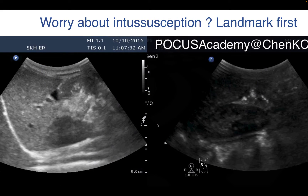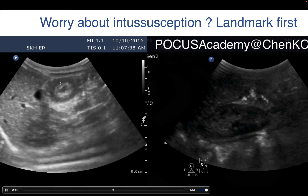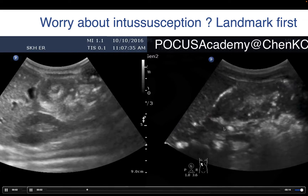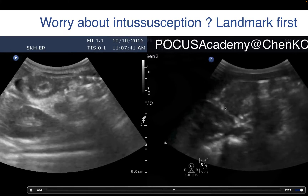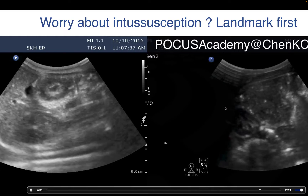When you are worried about patients having intussusception, again scan the landmark first. What is the landmark for intussusception, especially in pediatric patients? The most common type of intussusception in pediatric patients is the ileocolic type. So we put our transducer on the right upper abdomen. We can see these landmarks — liver, kidney. We look at these regions. In one case, we see the target sign. In another case, we see a pseudo-kidney sign. For adults, you should scan systematically rather than just these regions, because for adults, it's a different story.